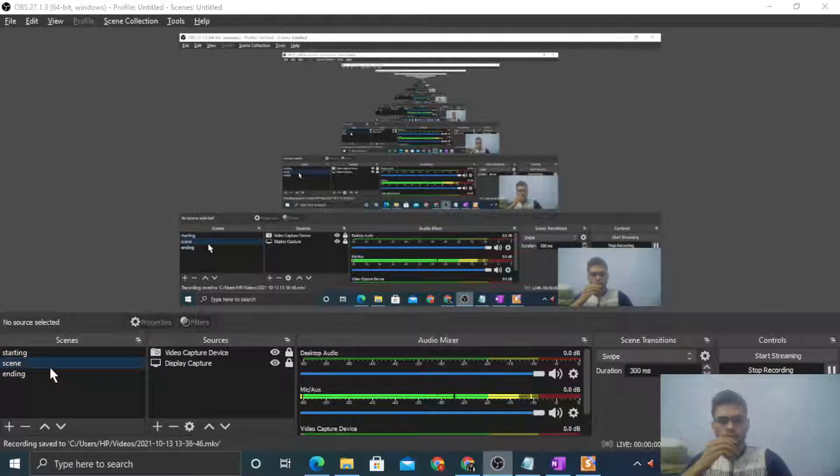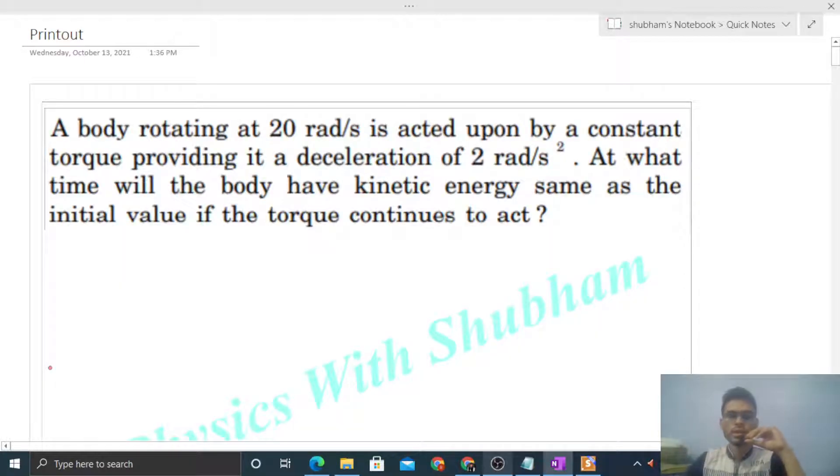Okay, hi everyone. So today let's discuss this interesting problem. It says a body rotating at 20 radian per second is acted upon by a constant torque providing it a deceleration of 2 radian per second square. At what time will the body have kinetic energy same as the initial value if the torque continues to act?